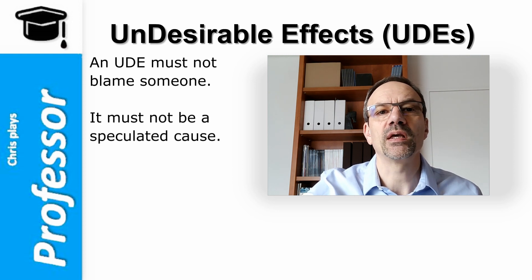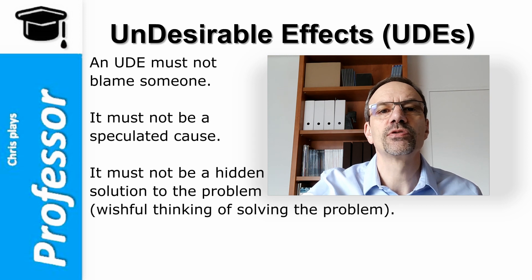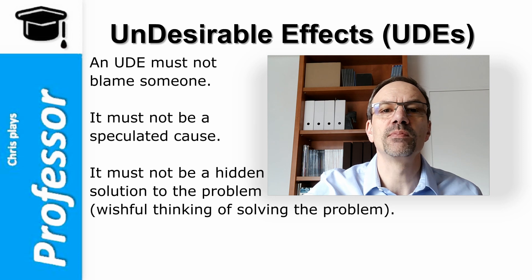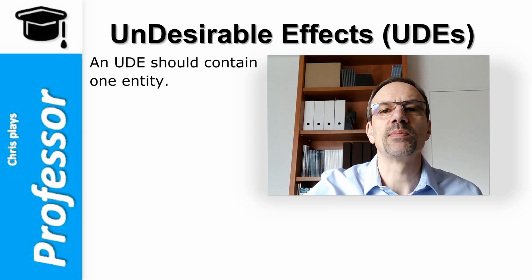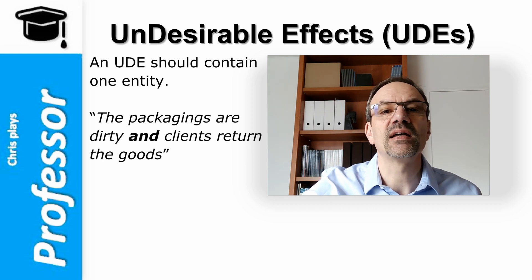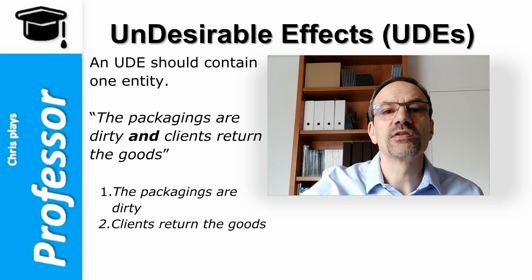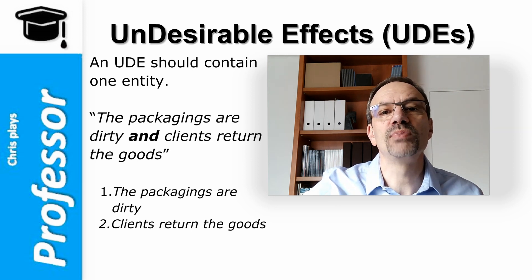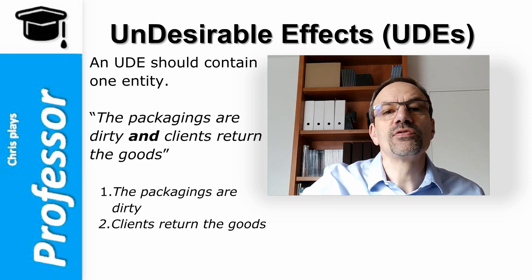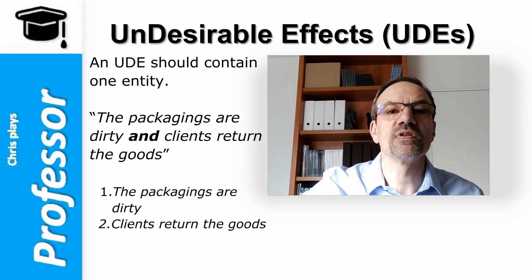It must not be a speculated cause — we mentioned it earlier. It must not be a hidden solution to the problem; in other words, wishful thinking of solving the problem, like for instance 'the machine is too old, in poor shape,' in hope of getting investment for a new one. It should contain one entity. This is a basic rule about entity statements, meaning always separating statements into distinct entities. For instance, the UD 'the packagings are dirty and clients return the goods' contains two distinct statements that may not necessarily have the same causes, as goods can be returned for a reason other than dirty packages, and dirty packages do not always lead to goods being returned. We need to separate the two outcomes and investigate their own causes. Maybe in the end there will be a common cause, but we cannot be sure from the start.